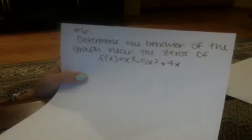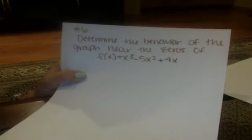I'm doing number 6 from practice test number 3, and it says to determine the behavior of the graph near the zeros of f(x) = x³ - 5x² + 4x.